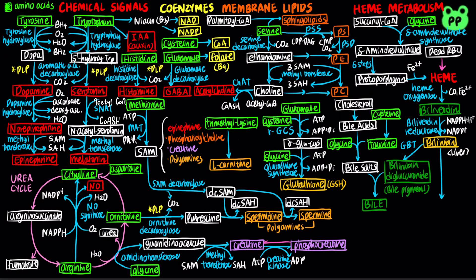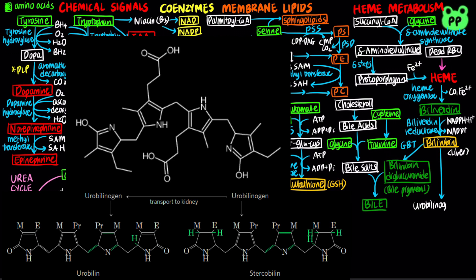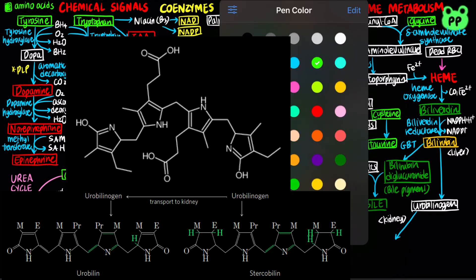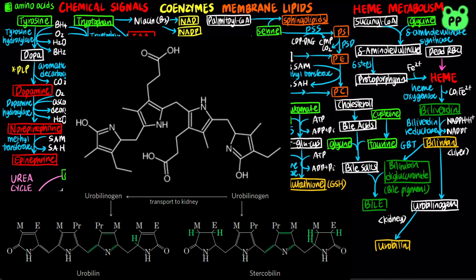Bilirubin is ultimately degraded to the colorless urobilinogen by microbial enzymes in the intestine. Some urobilinogen is reabsorbed into the blood and transported to the kidney, where it is converted to urobilin, the compound that gives urine its yellow color. Microbes in the intestine convert the remaining urobilinogen into stercobilin, which gives feces its red-brown color.